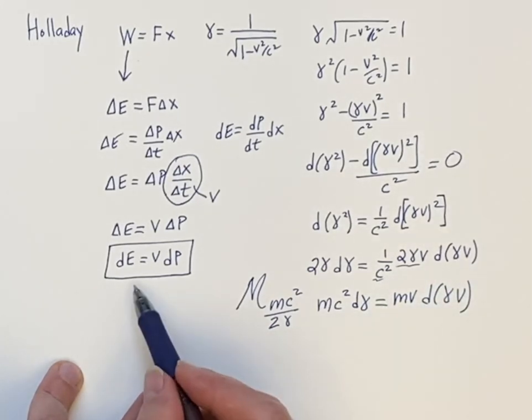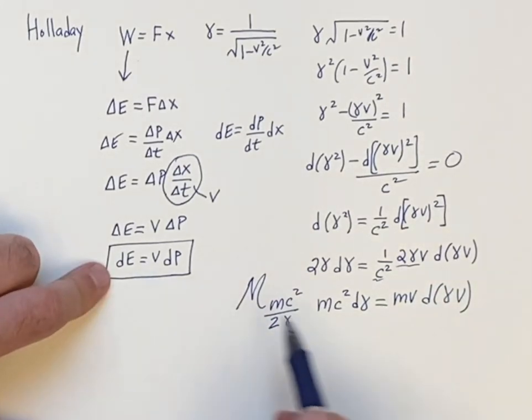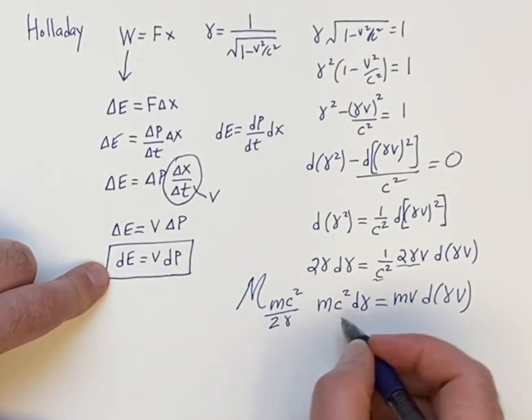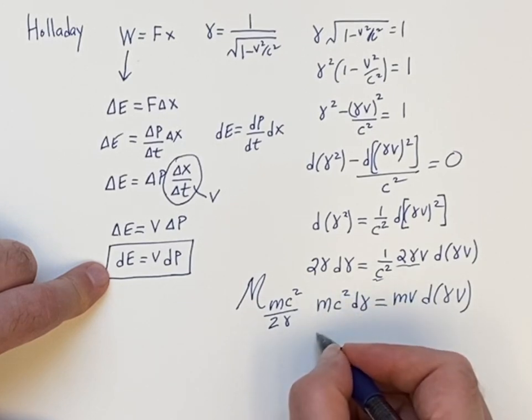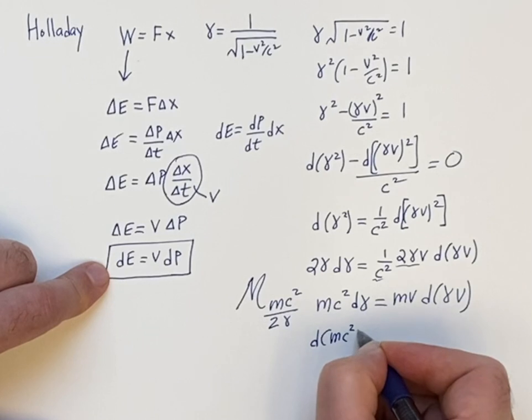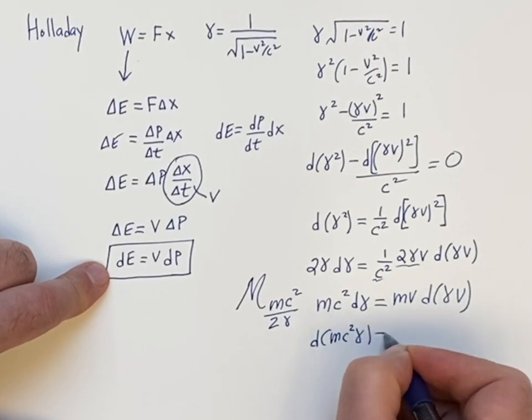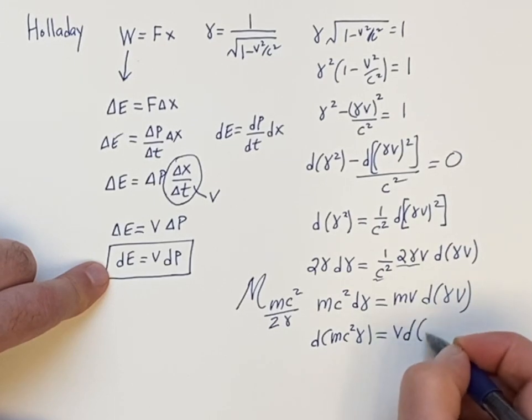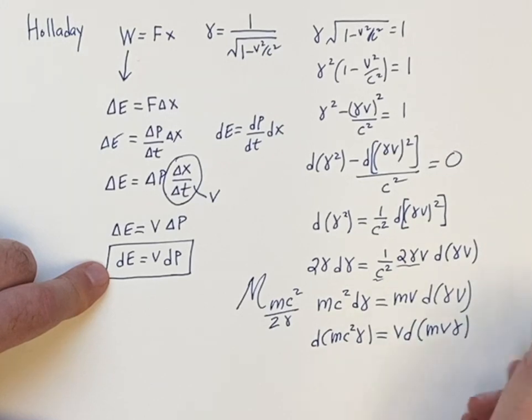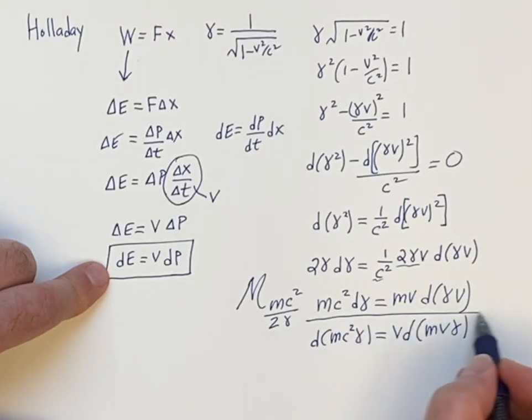Look at this. We have this formula. Watch how we can make this look very similar to this formula by taking these constants and moving these constants inside. You can always move the constants inside the differential, no problem. And here we can move the M inside. MV gamma. And we are finished.